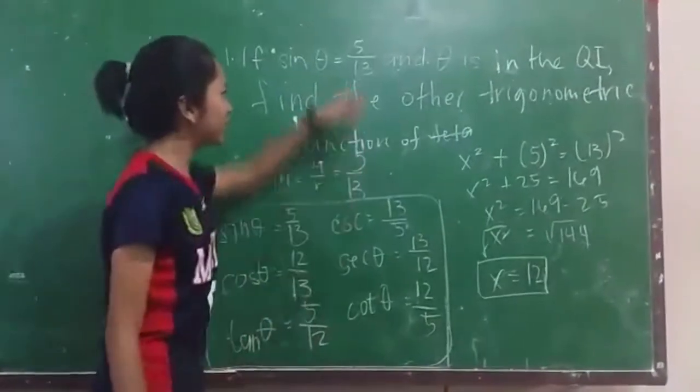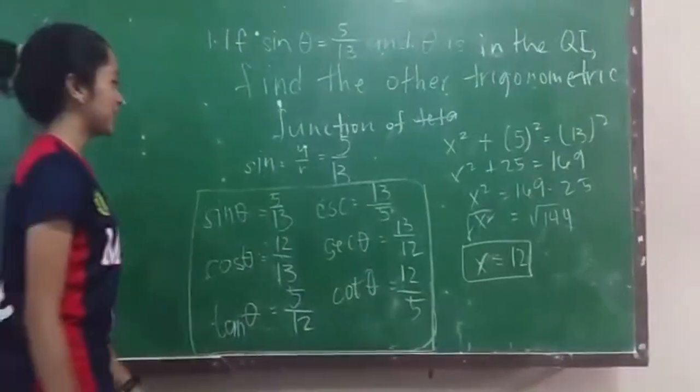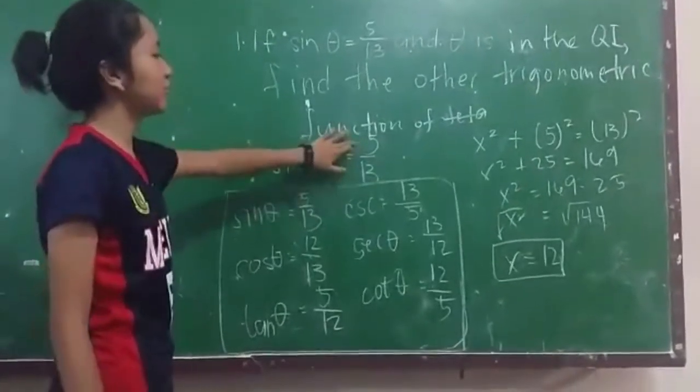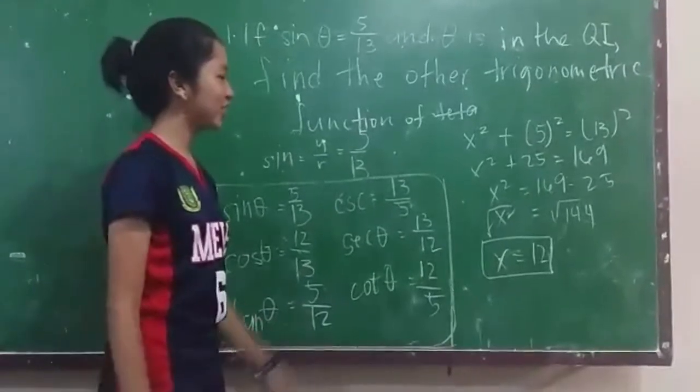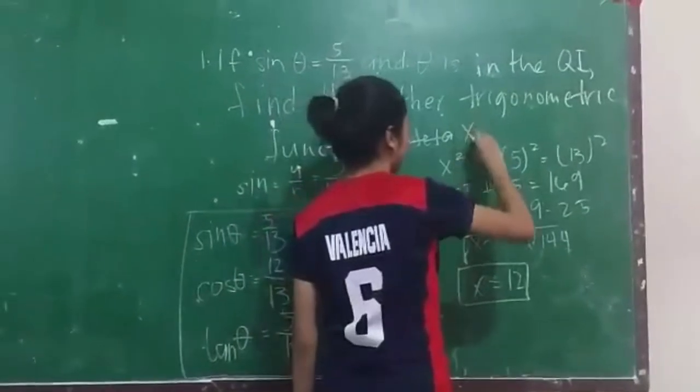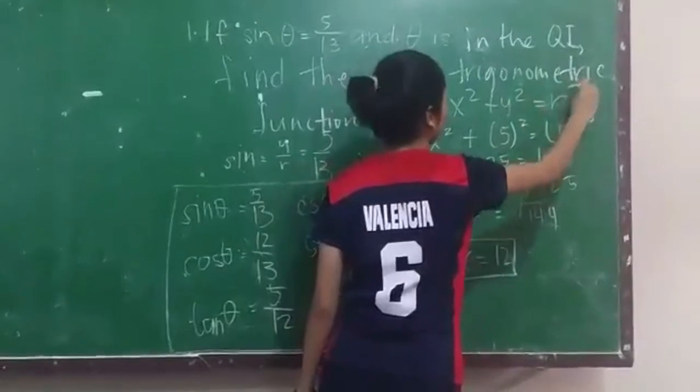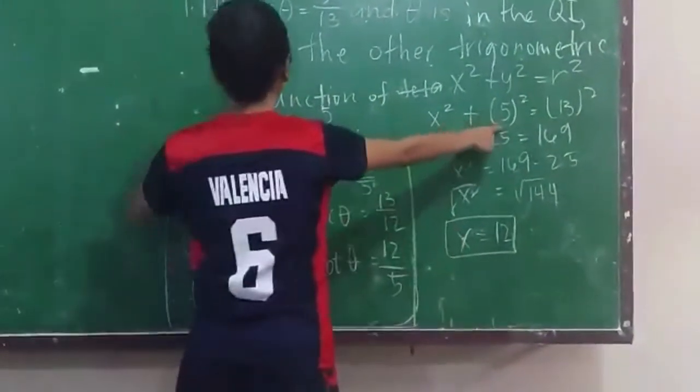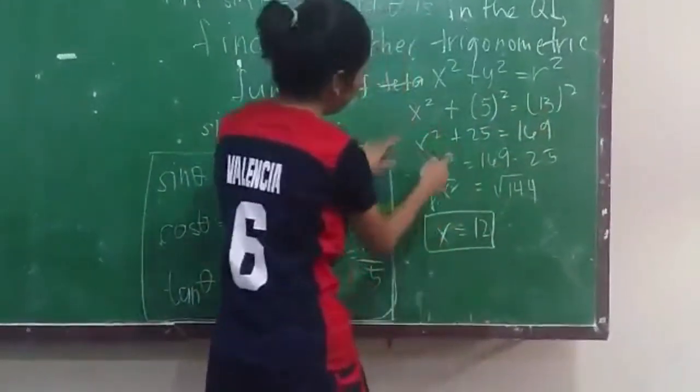Sin θ is 5 over 13 and theta is in the first quadrant. Find the other trigonometric functions of theta. Sin θ is equal to y over r, and y over r is equal to 5 over 13. First we'll use the Pythagorean theorem to look for x. The Pythagorean theorem is x squared plus y squared is equal to r squared. Then substitute y to 5 and r to 13.